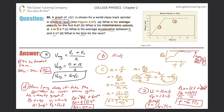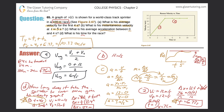The time for part one was 4 seconds, and the time to complete part two — covering the remaining 76 meters — was 6.33 seconds. The total time for the race is 4 plus 6.33, which equals 10.33 seconds, or approximately 10.3 seconds.